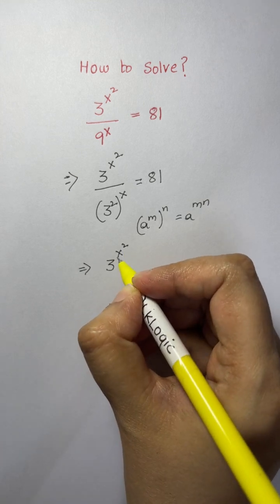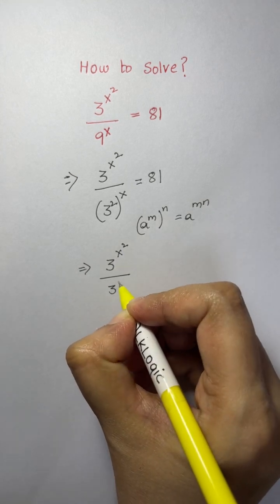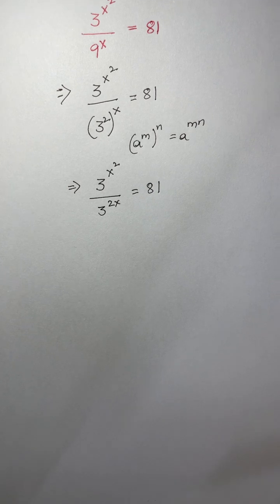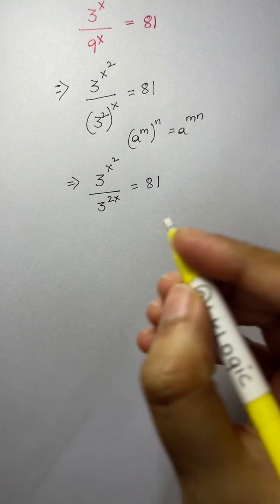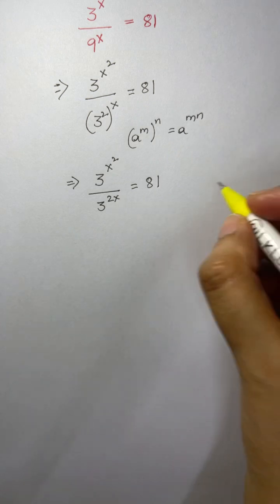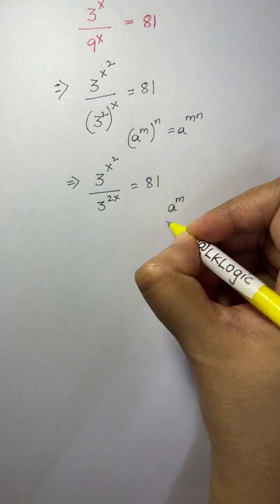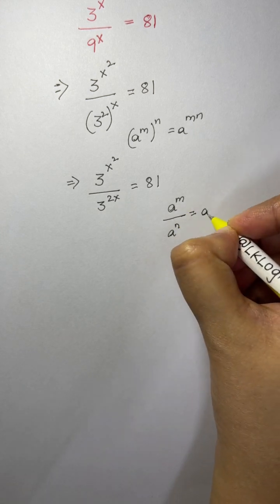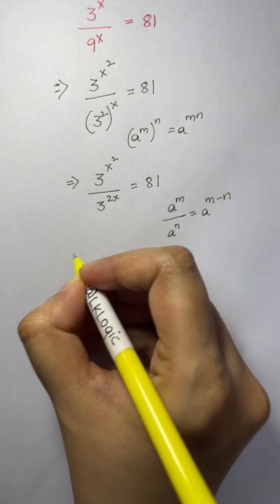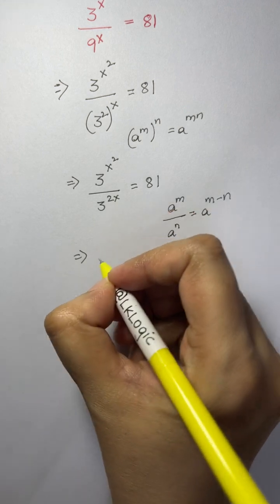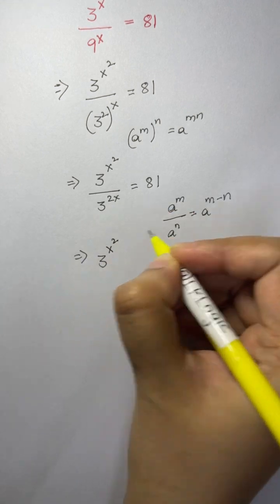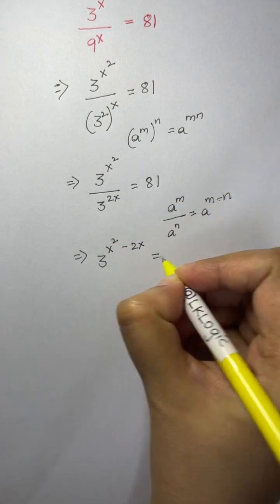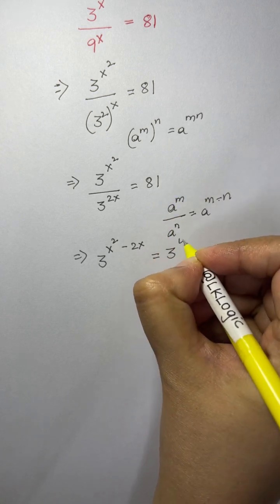So we have 3 to the power of x squared over 3 to the power of 2x equals 81. We have the same base with division between them, so we apply a to the power of m over a to the power of n equals a to the power of m minus n. So we get 3 to the power of x squared minus 2x equals 81, which can be written as 3 to the power of 4.